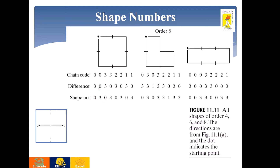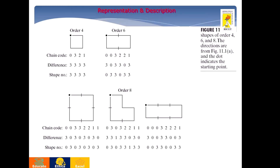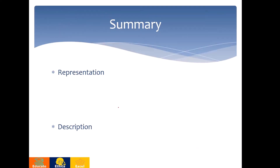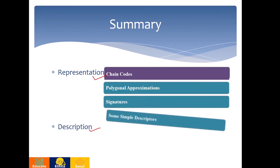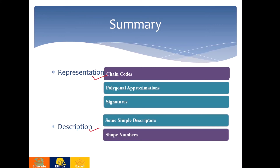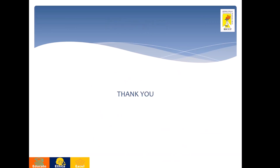Shape number is obtained by shifting the difference value such that the lower value comes to the first portion. Various examples have been mentioned here. As a summary, we have seen about representation and description. Under representation, we have seen polygonal approximations, signatures, and chain codes. Under description, we have seen simple descriptors and shape numbers. As a whole, we have seen how the image can be represented and described such that its interpretation and recognition can be improved. These are the references. Thank you all.